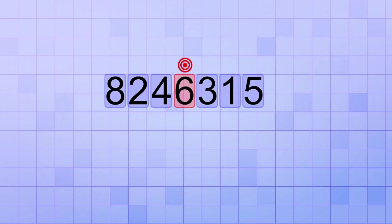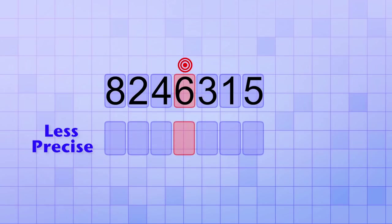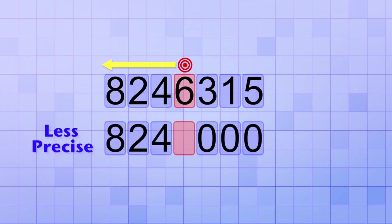As I mentioned, rounding a number means making a new, less precise version of it. In that new number, any digits that are in number places smaller than the target will automatically get replaced with zeros. And in most cases, any digits that are in number places larger than the target will automatically be kept the same in the new rounded version. There are some exceptions, as we'll see later in this video.